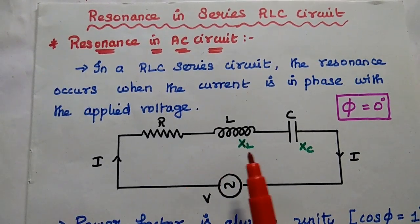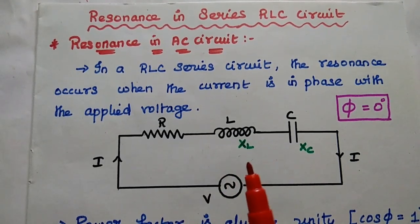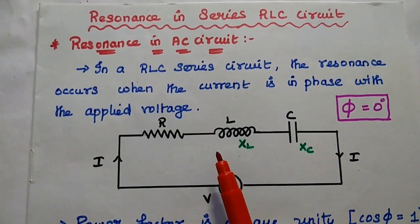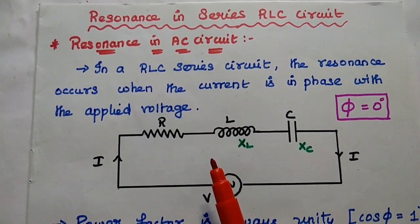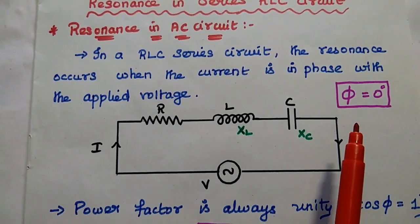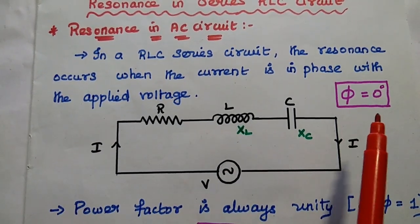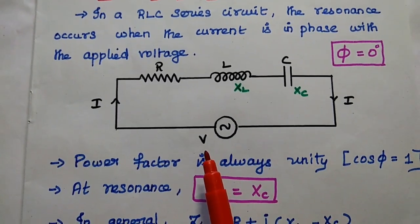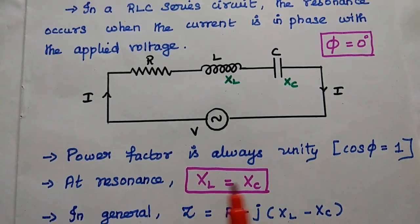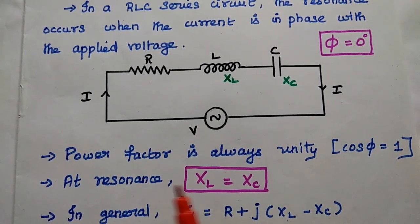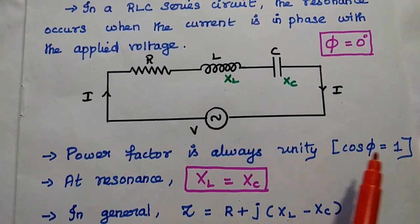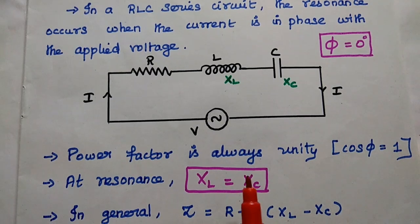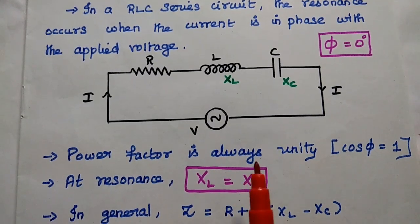In the RLC series circuit, resonance occurs when the current and the applied voltage both are in phase. Then there is no phase difference — the phi value is equal to zero. If phi equals zero, then the power factor of the circuit is always unity. As we know, power factor is cos phi, so cos 0 equals 1. Whenever the power factor is 1, we get the maximum amount of power in the circuit.